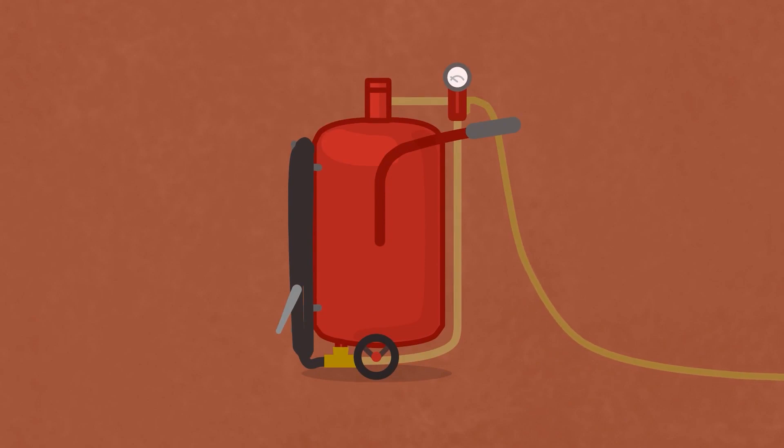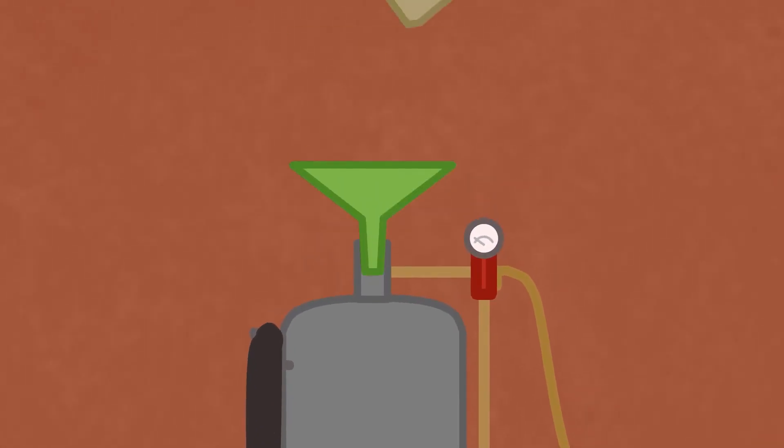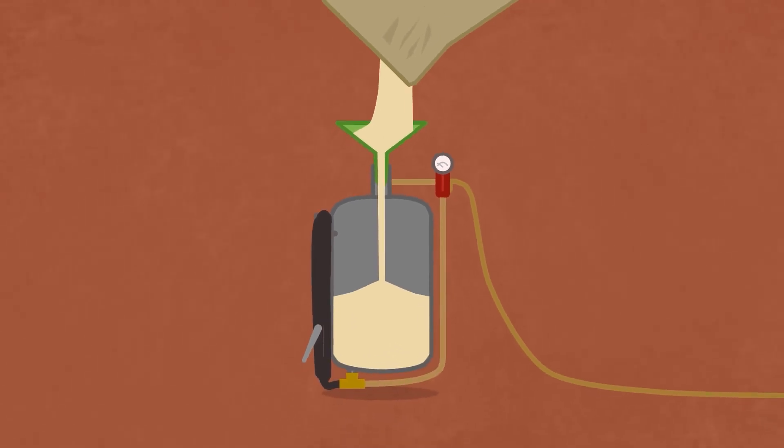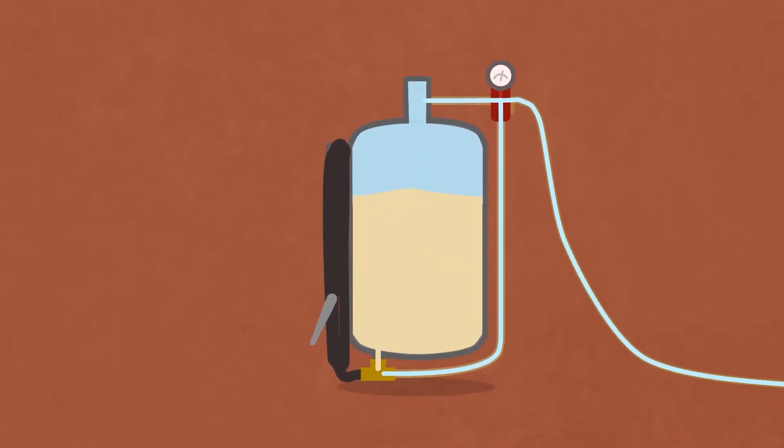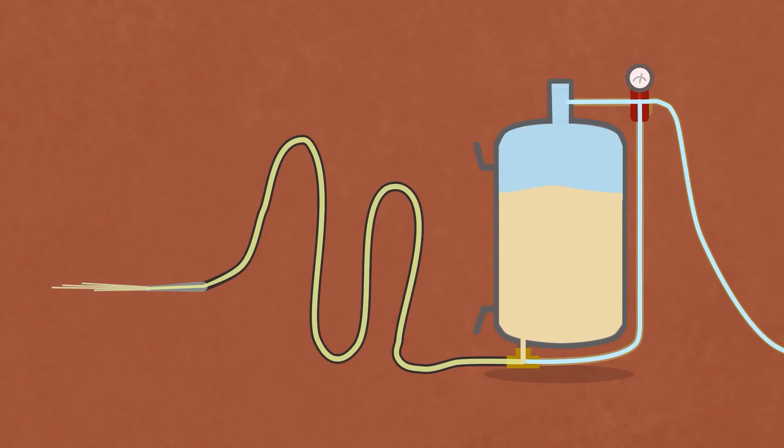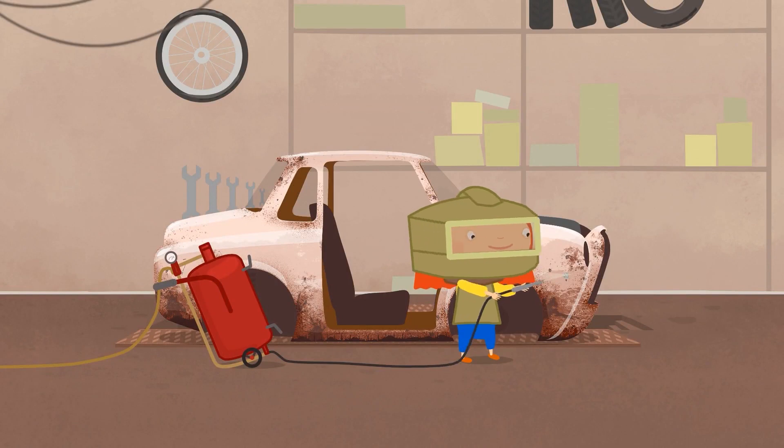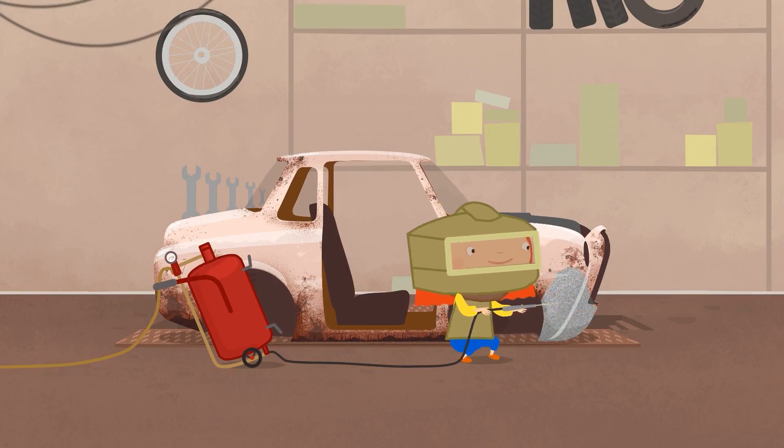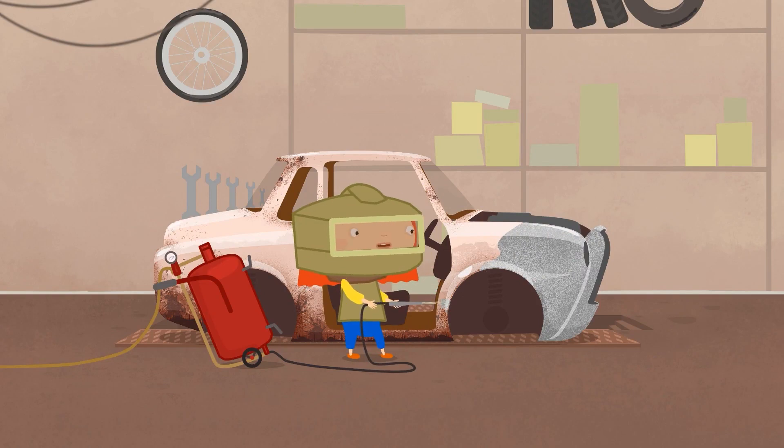This tank is filled with plain river sand. And this hose supplies the tank and the mixer with air. Air and sand are mixed and thrown out with a special pistol. It's time to turn on the machine. Look, the rust and the old paint just disappeared.